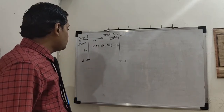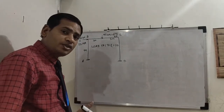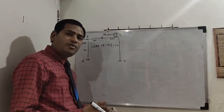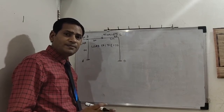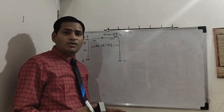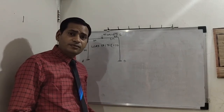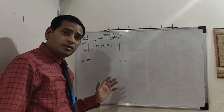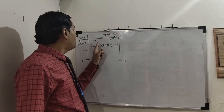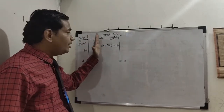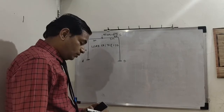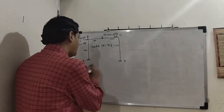While solving frames, always start with the beam mechanism. In beam problems there was only one mechanism, but in frames there are at least two or three mechanisms. The three compulsory mechanisms are: the beam mechanism (for the beam), the sway mechanism, and the combined mechanism. We will start with the beam mechanism first.